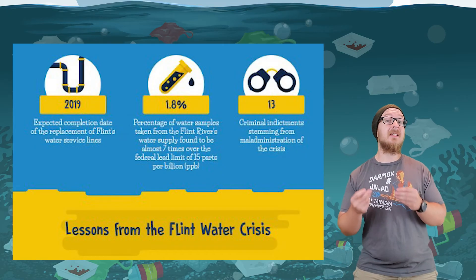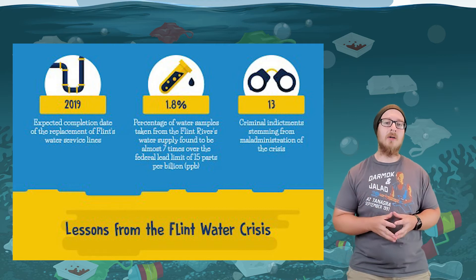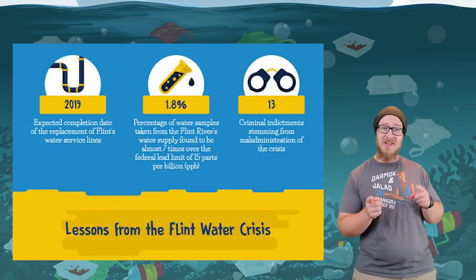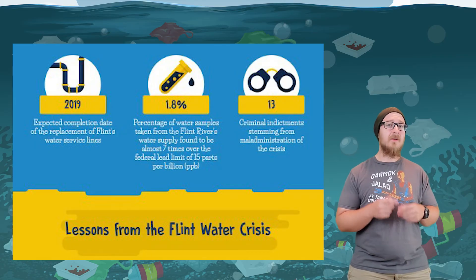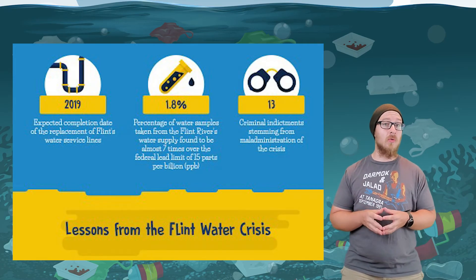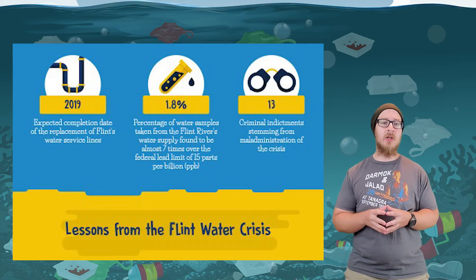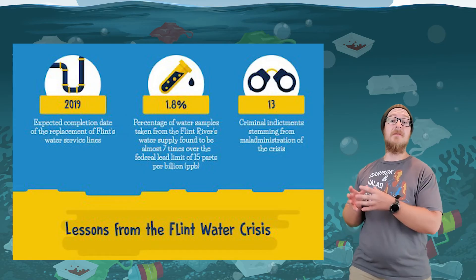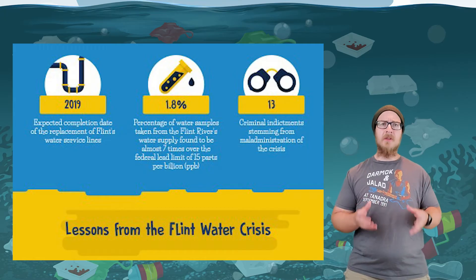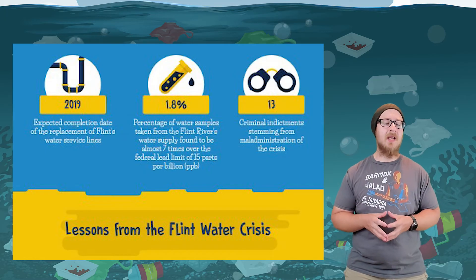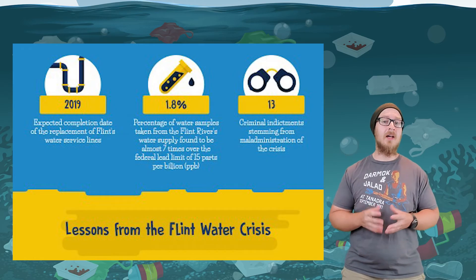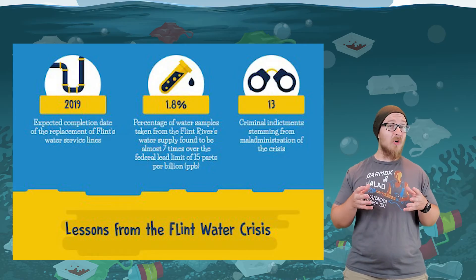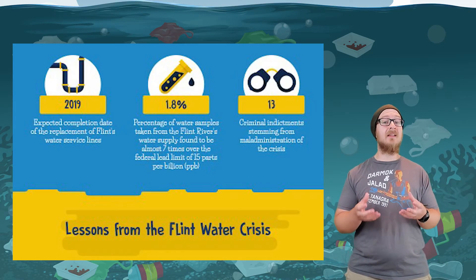Flint, Michigan had a lead water crisis that was a disaster that should have been avoided. Officials changed the source of water from Lake Huron and the Detroit River over to the Flint River. The Flint River had a lower pH, which eroded away the coating on the pipes, ultimately exposing over 100,000 residents to high levels of lead.